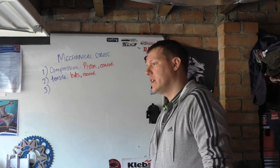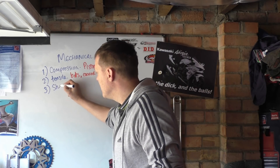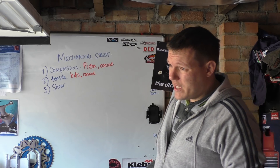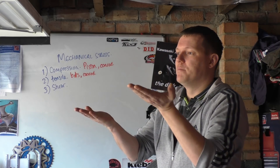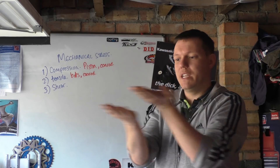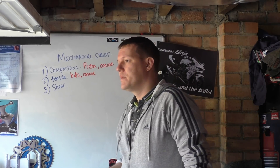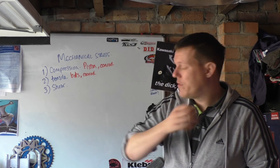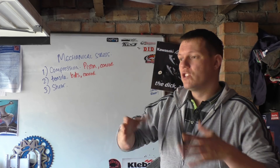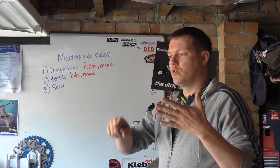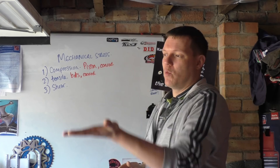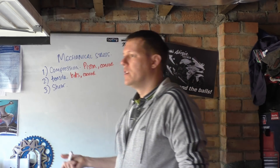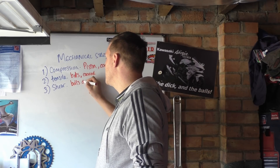Number three — this one might not be as obvious — is shear stress. The way to remember it is like shears: if you're cutting a hedge or something, it's this action of moving parallel but opposite to each other. Shear stress can happen to bolts sometimes. We have a lot of rotational components. A good example is a brake disc with one or two bolts in it — one side fixed, one side moving. That's shear stress.